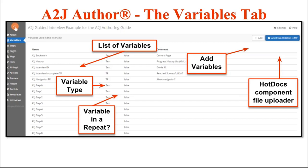It also tells you what type of variable it is — be it text, true/false, date, number, or multiple choice — and it tells you if the variable is allowed to be used in a repeat loop, meaning if it can hold multiple values. By double-clicking on any named variable in the list, it'll open up the Variable Design window where you'll be able to edit the name, change its type, make it hold multiple values, or add notes about that variable.